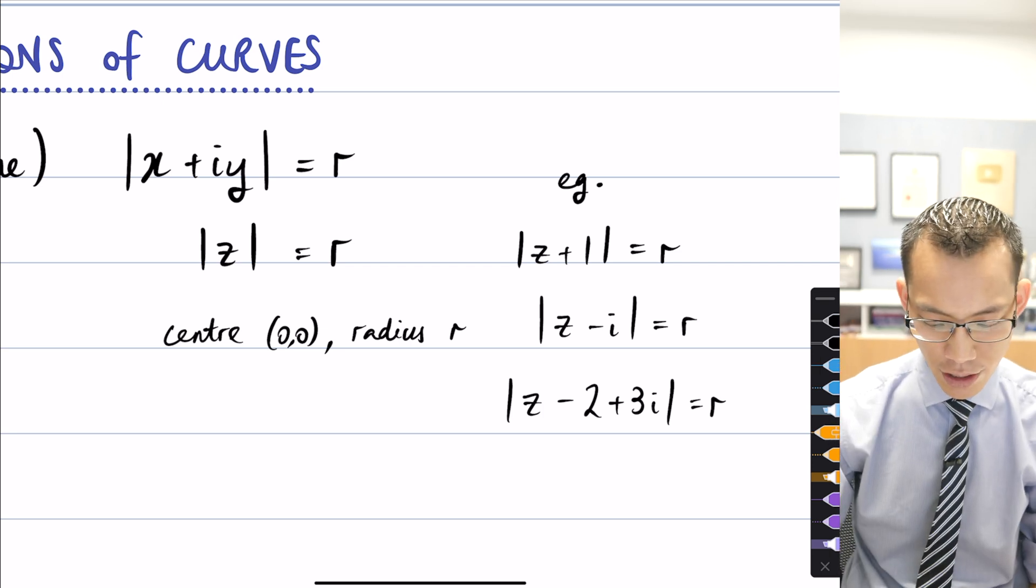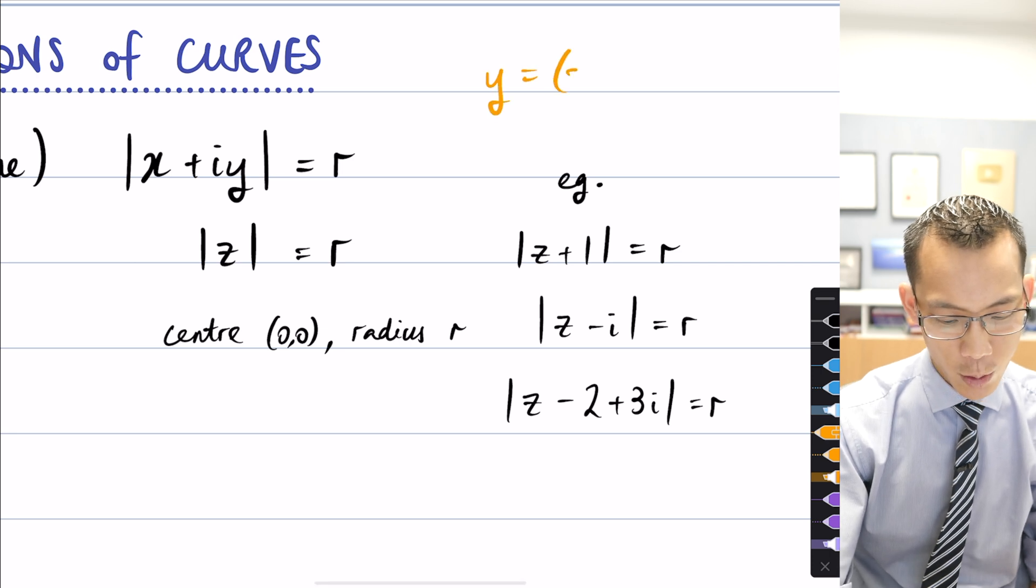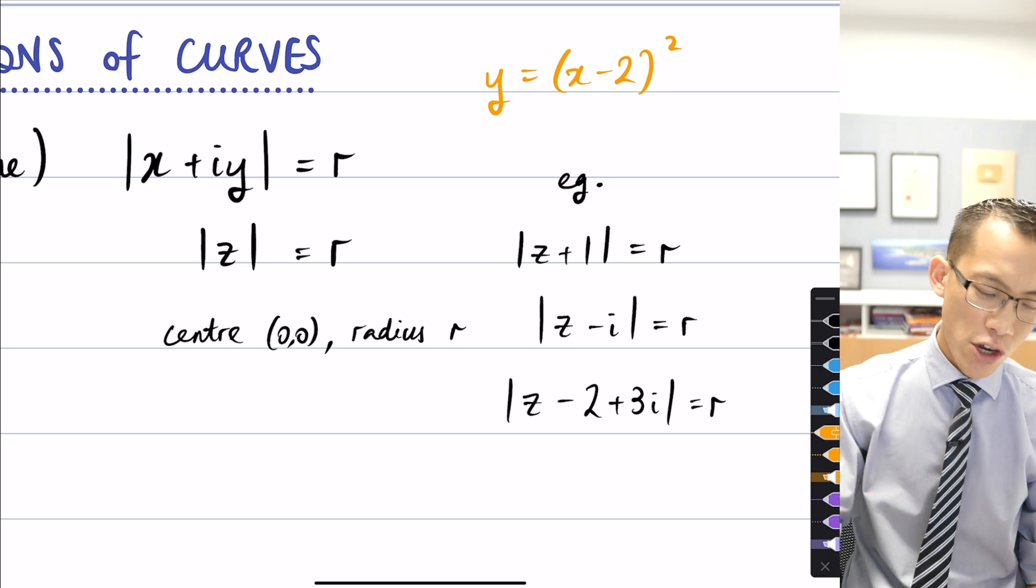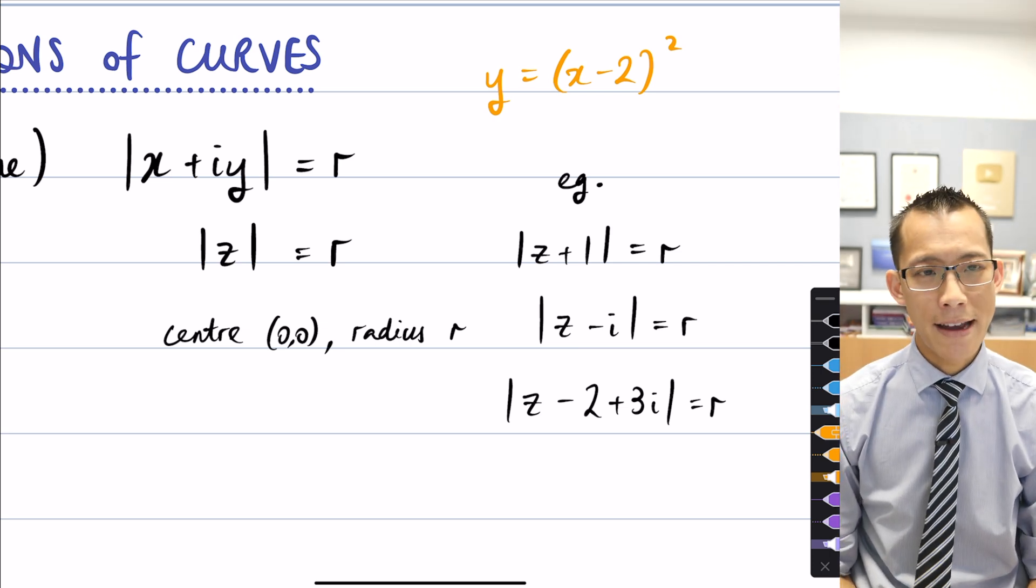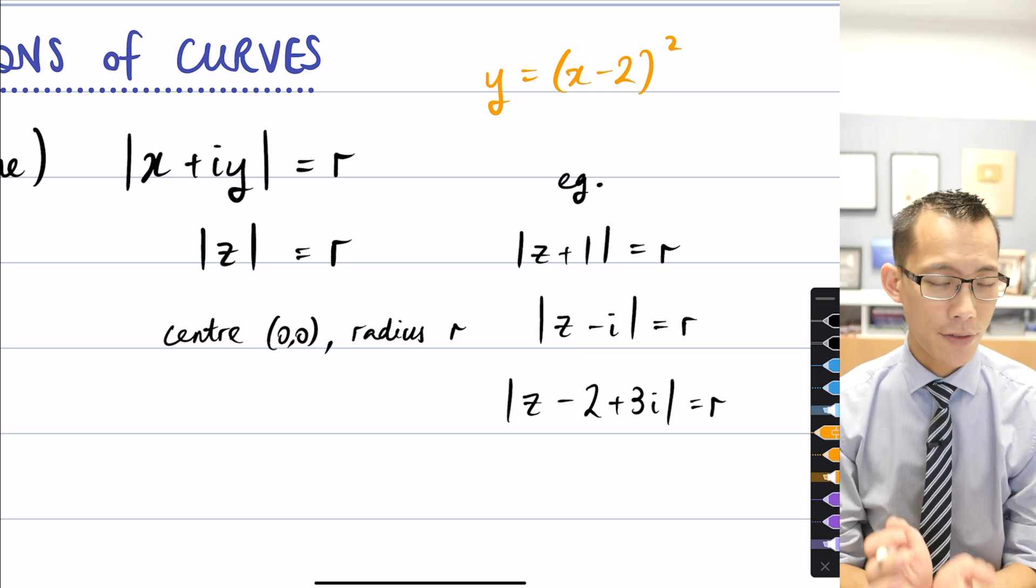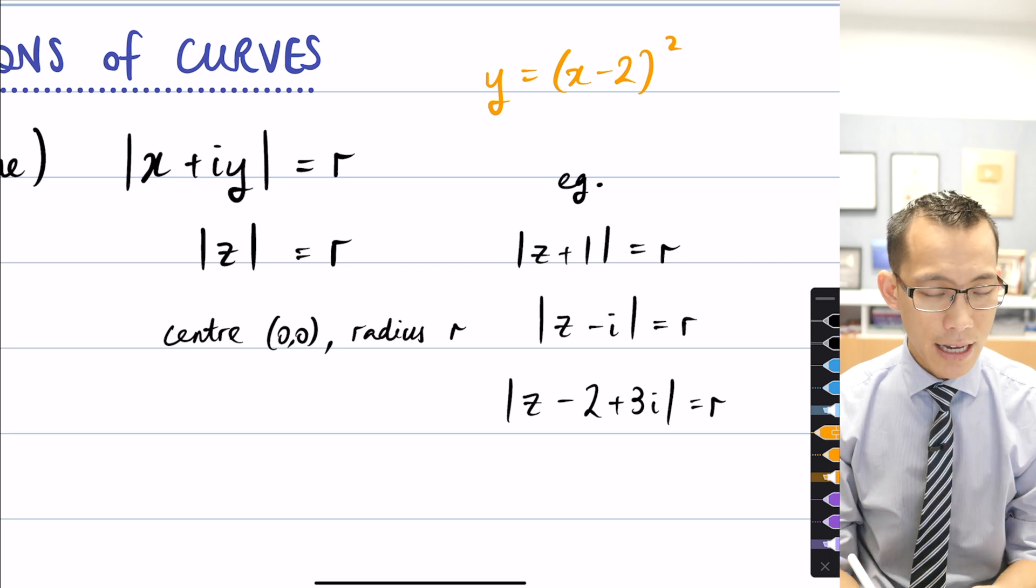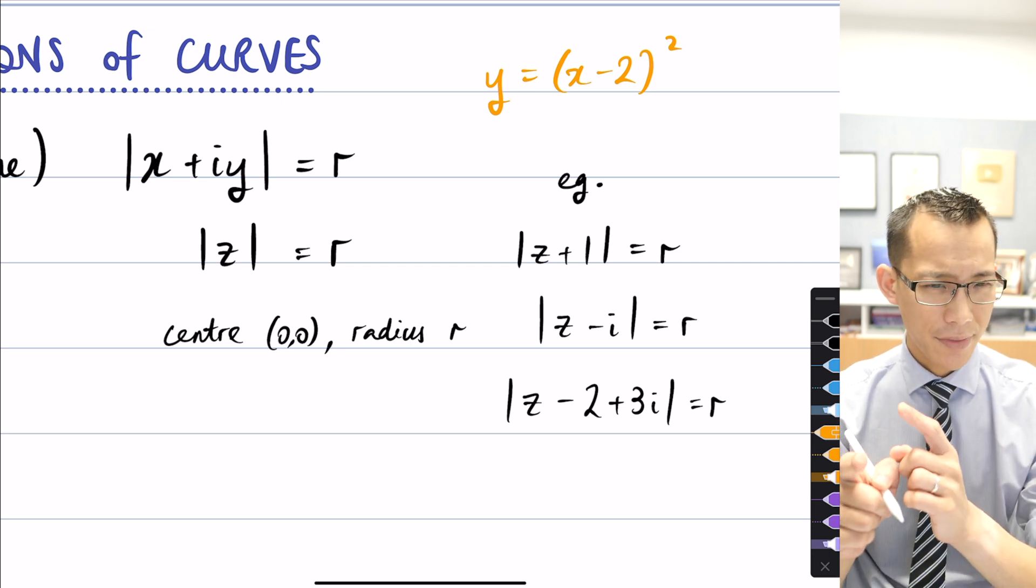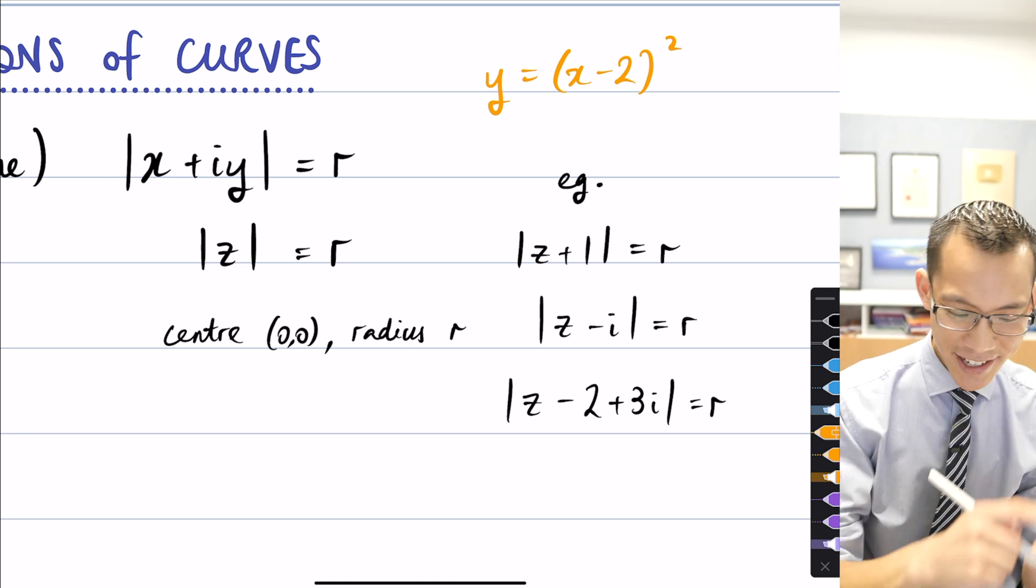If you think about an equation like y equals (x minus 2) squared, so you can picture the parabola that goes with this. It's a parabola that doesn't have its vertex at the origin. Its vertex is at positive 2, yeah, it's moved in the other direction.